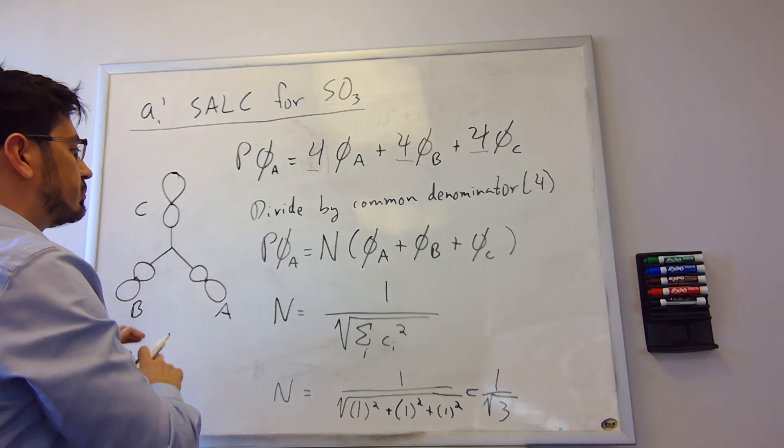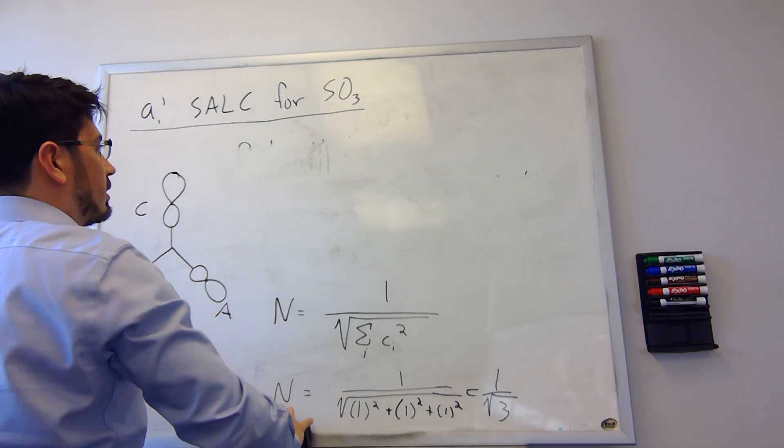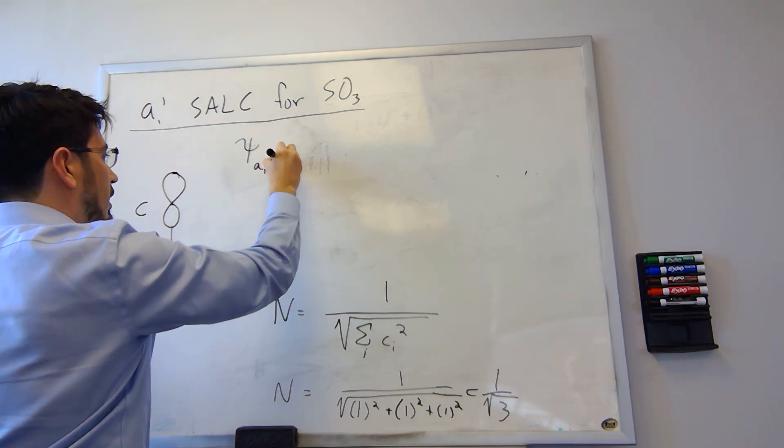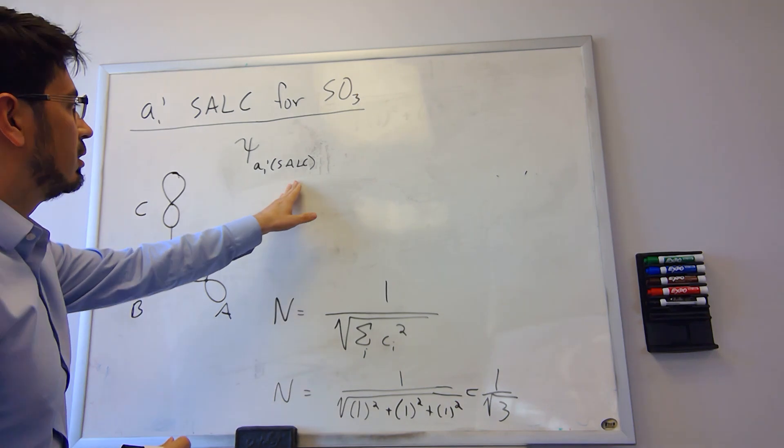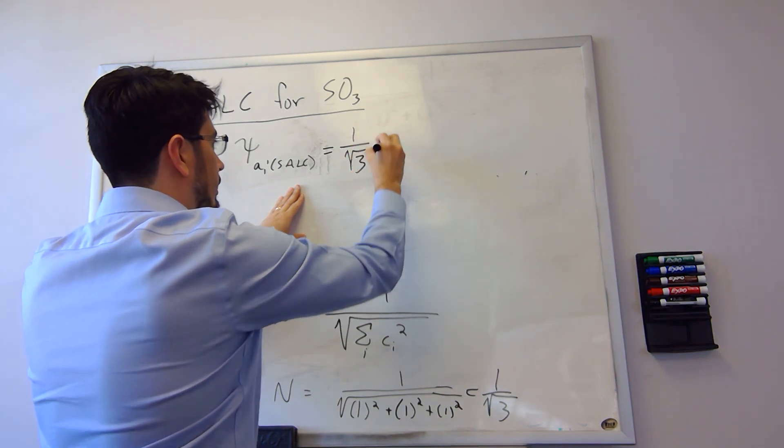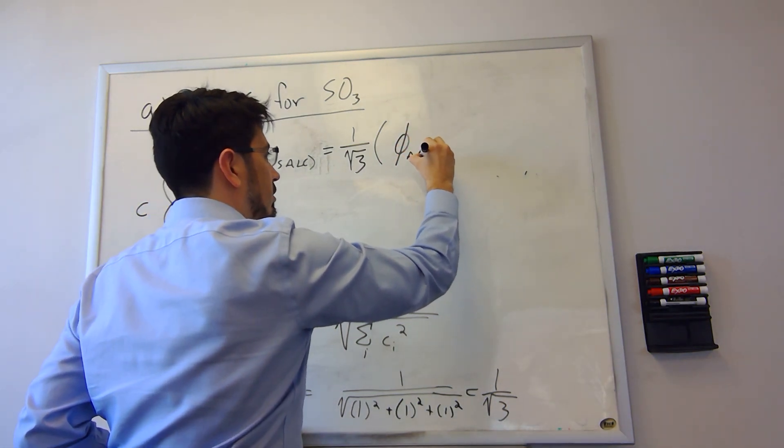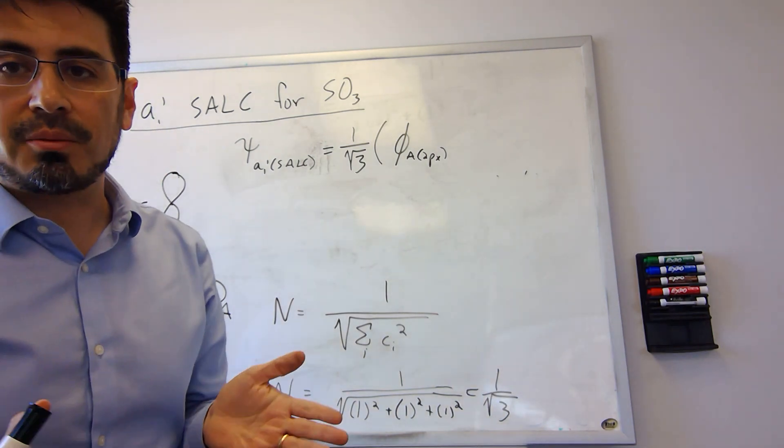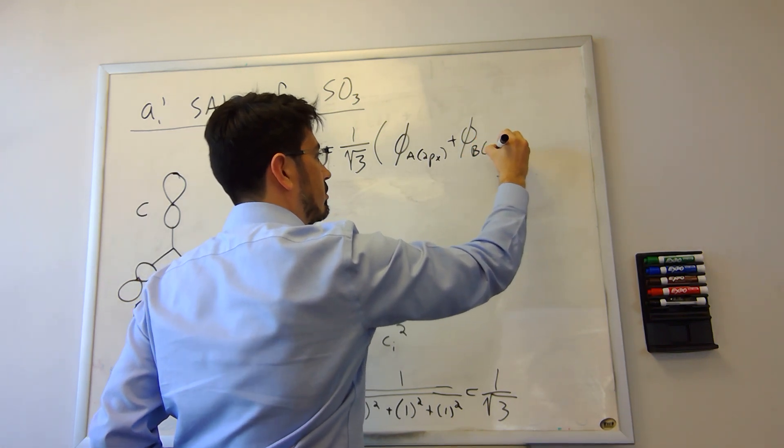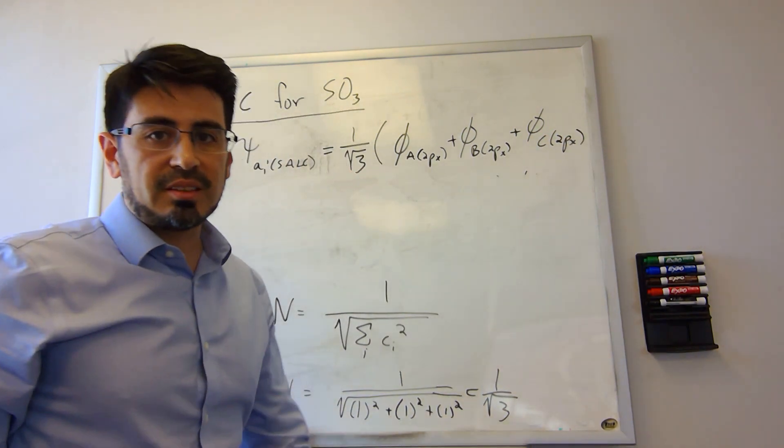All right, so now we can write out our SALC for A1 prime. This is the group orbitals of A1 prime as equal to 1 over root 3. And now I'm going to write PA 2px because that's the function that we're using, the 2px of oxygen, the one on the B position, and the one in the C position.